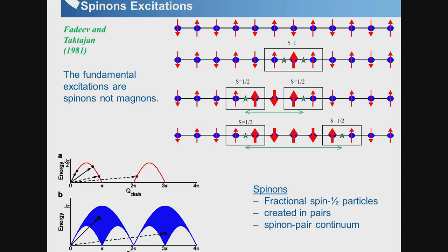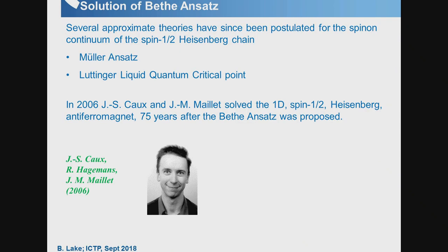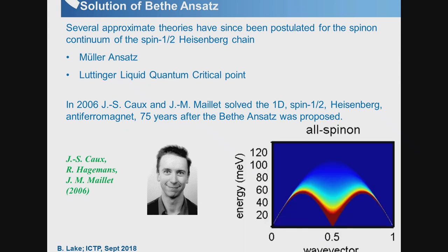This broad, continuous scattering is a consequence of creating two particles in the scattering event. Various theories have been applied to this problem. In 2006, Jean-Sébastien Caux and colleagues solved it to very high order — 75 years after it was originally proposed. Their prediction for the spinon continuum as a function of wave vector and energy can be directly compared to neutron scattering data.